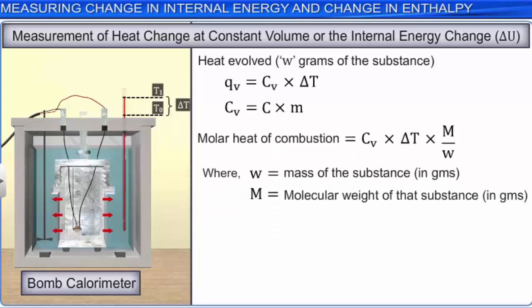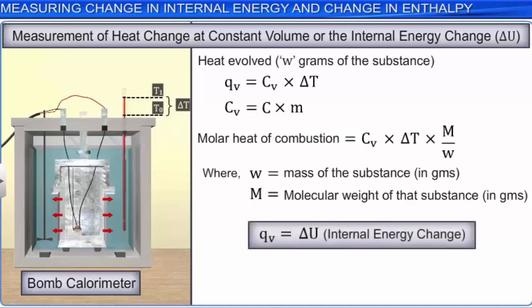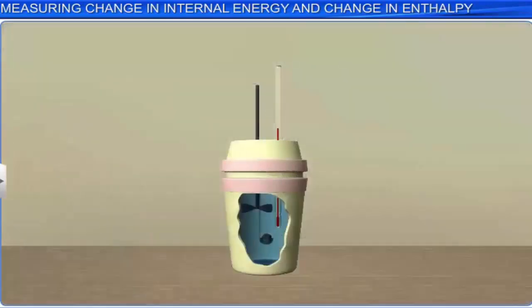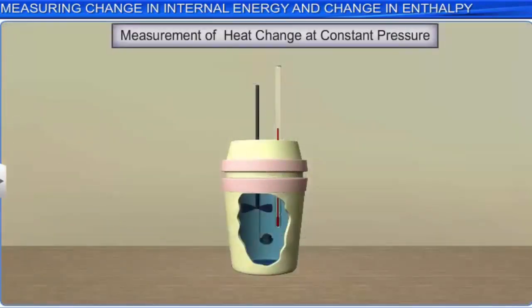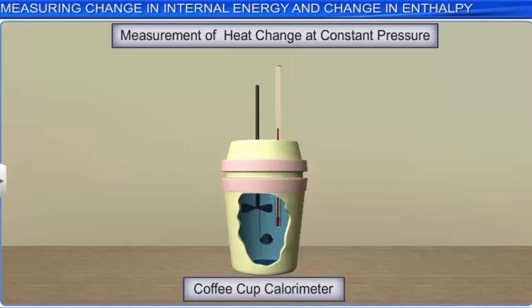As the reaction is carried out in a closed vessel, the heat evolved is the heat of combustion at constant volume, and is a measure of internal energy change delta U. To measure the heat changes at constant pressure, a device known as a coffee cup calorimeter is used. These calorimeters are open to the atmosphere, so they measure heat changes at constant pressure.